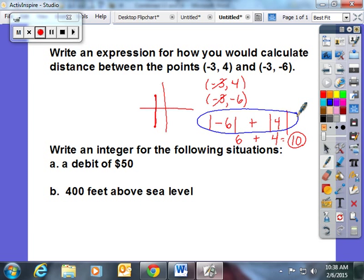Write an integer. This is an old but a very good word. Positive or negative number. For the following situations. A debit of $50 means that you are taking $50 out of your checking account or your debit. So it's minus 50. 400 feet above sea level is plus or positive 400. It's not plus, but positive 400.